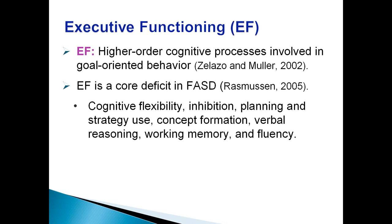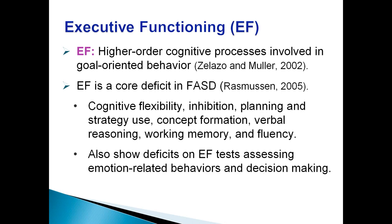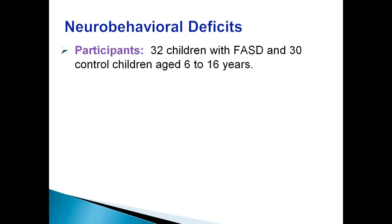There are now a number of research studies on executive functioning — ten years ago there were very few, and now it's become a really hot area in FASD. Across all areas and different research studies, we see impairments in cognitive flexibility, inhibition, planning and using strategies, concept formation, reasoning, working memory, and fluency. They also show deficits on tests related to emotion-related behaviors and decision making, which are thought to be involved in the 'hot' executive functioning. I'm going to go into more detail about some of the executive functioning research we've conducted here.